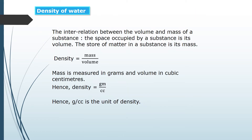Let us see the density of water. The interrelationship between the volume and mass of a substance: the space occupied by a substance is its volume, and the amount of matter stored in a substance is its mass. The ratio between mass and volume is called density. Density is mass divided by volume.